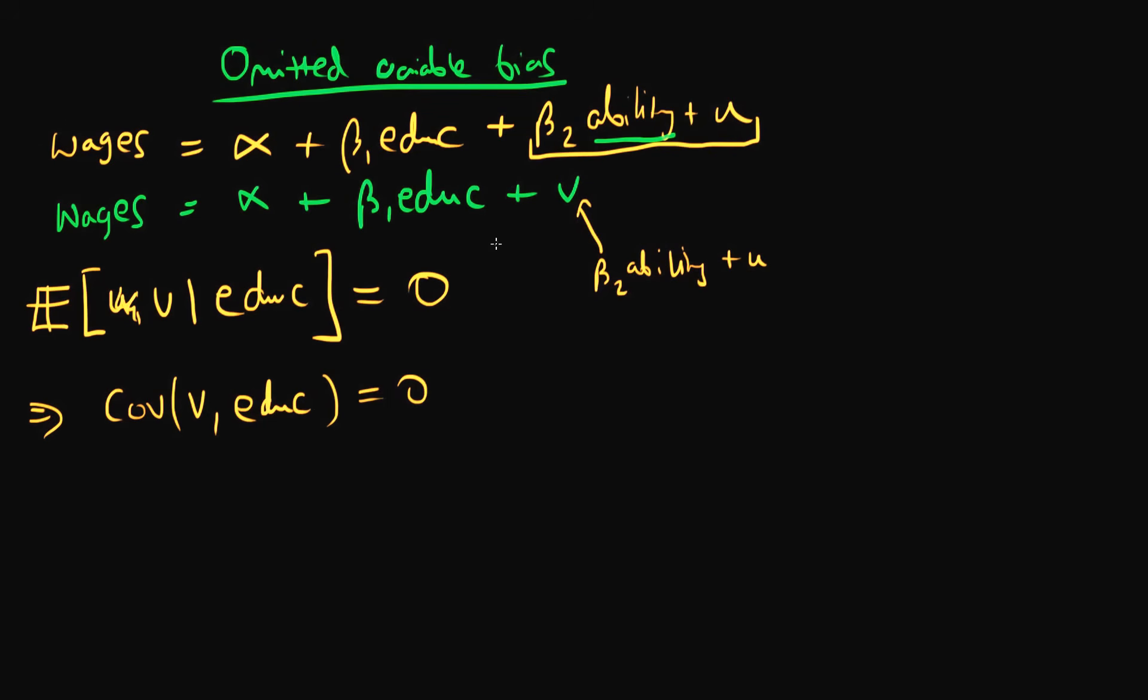But notice that we said that v here contains a measure of an individual's innate ability. So we need to find out whether education, our x variable, is correlated with an individual's level of innate ability.